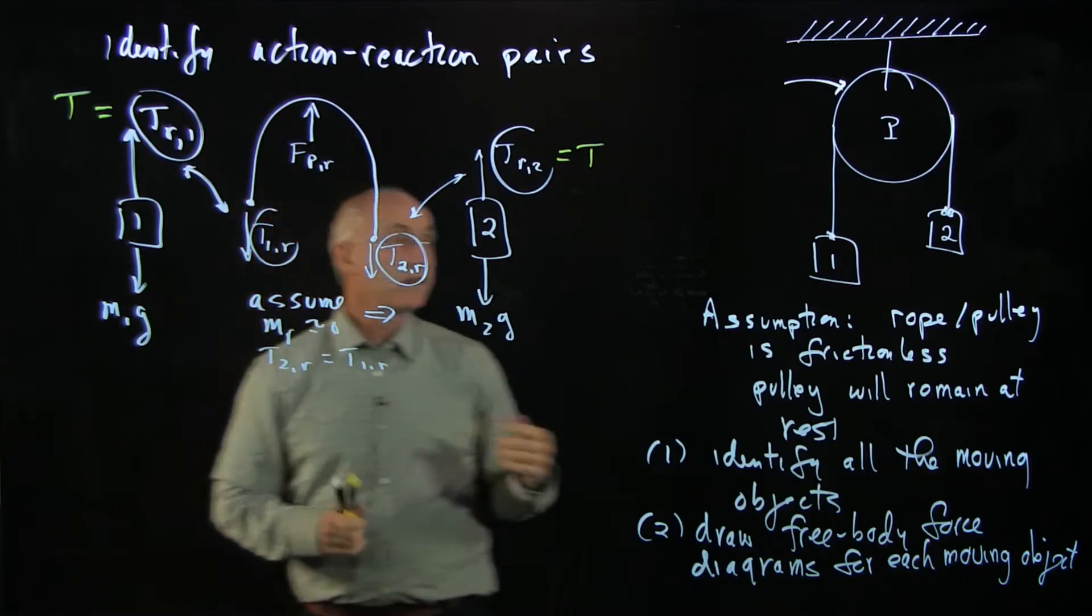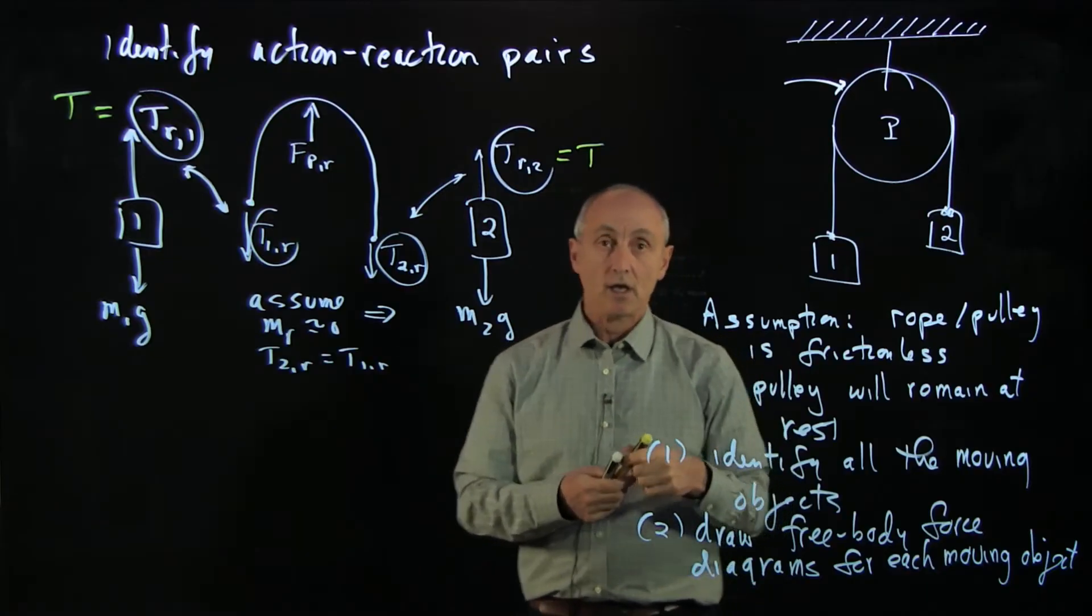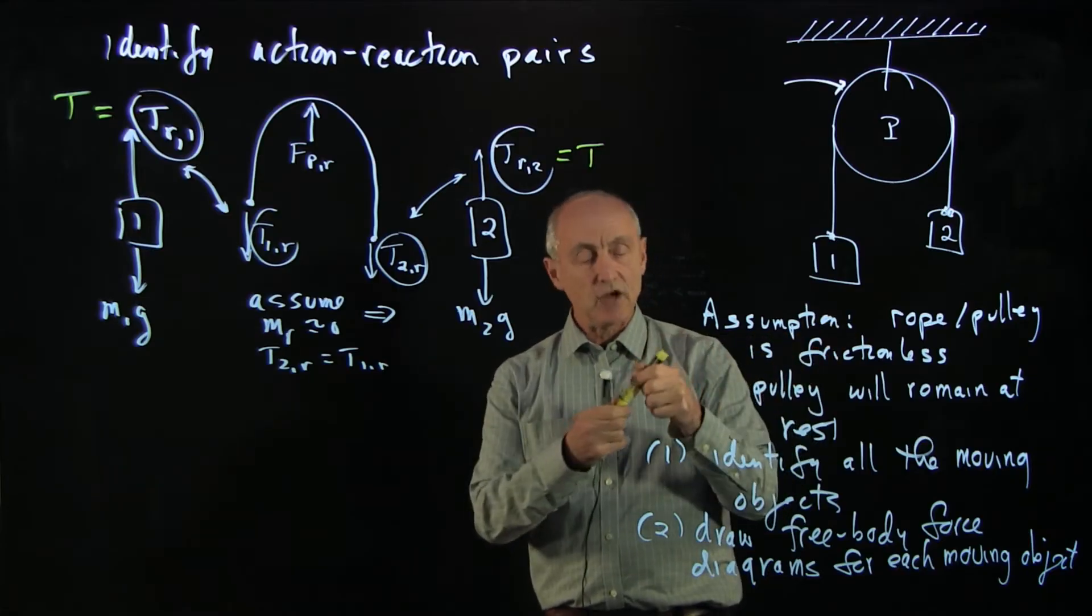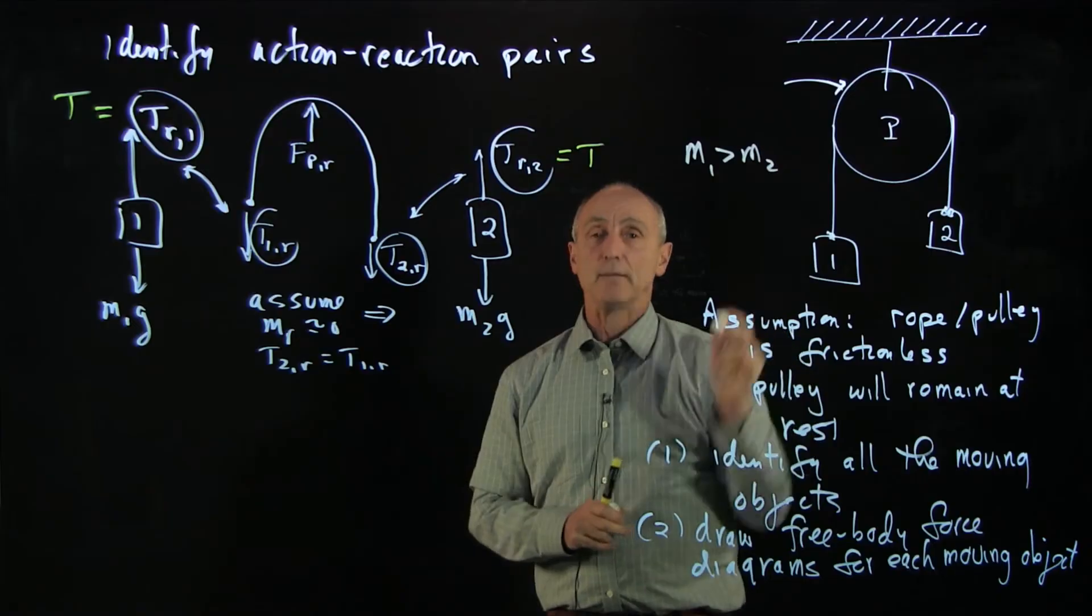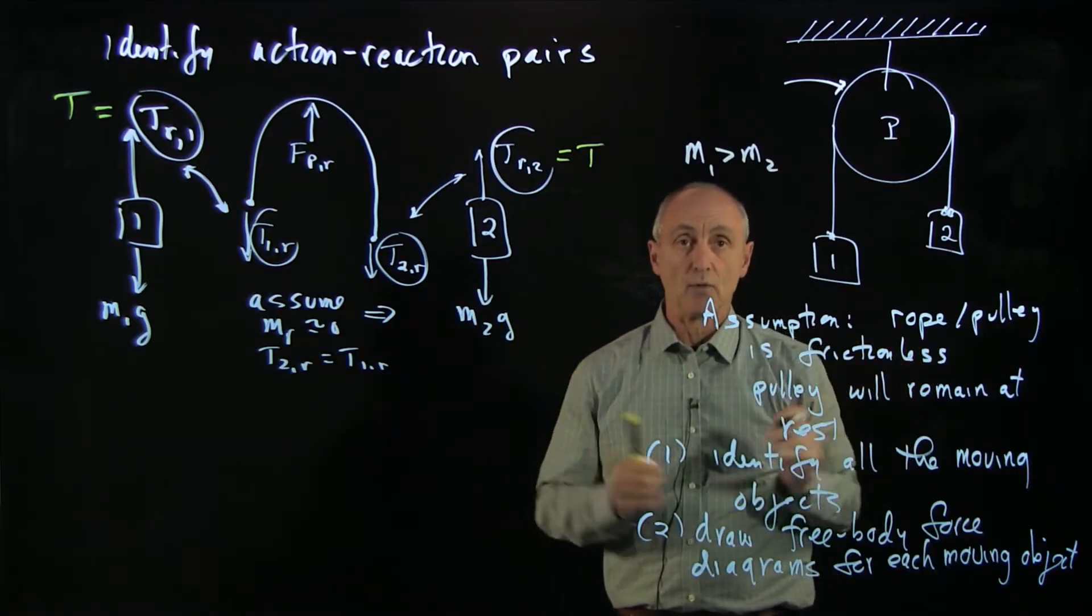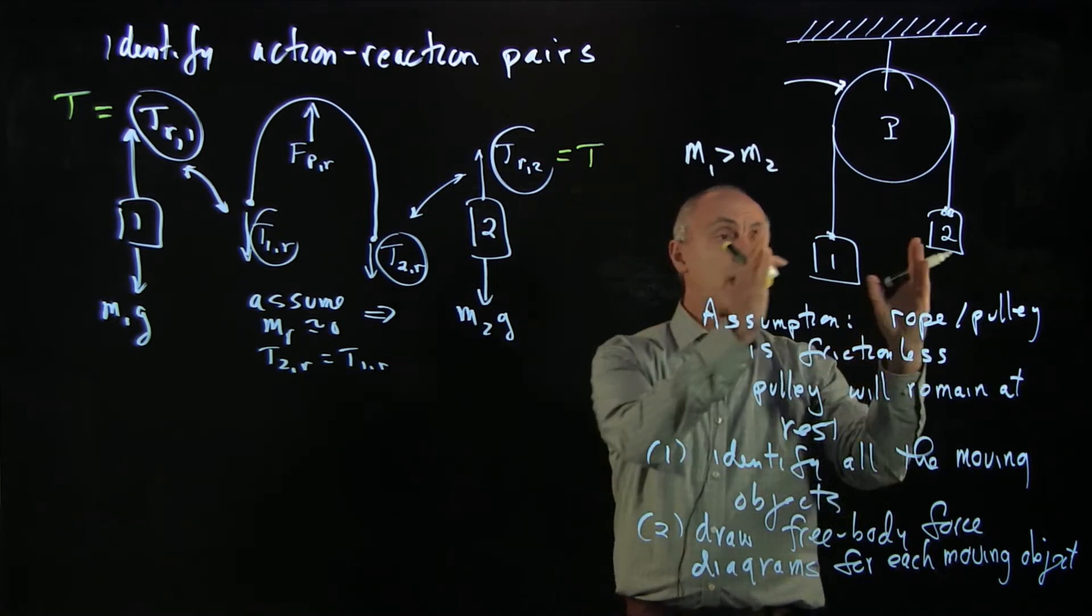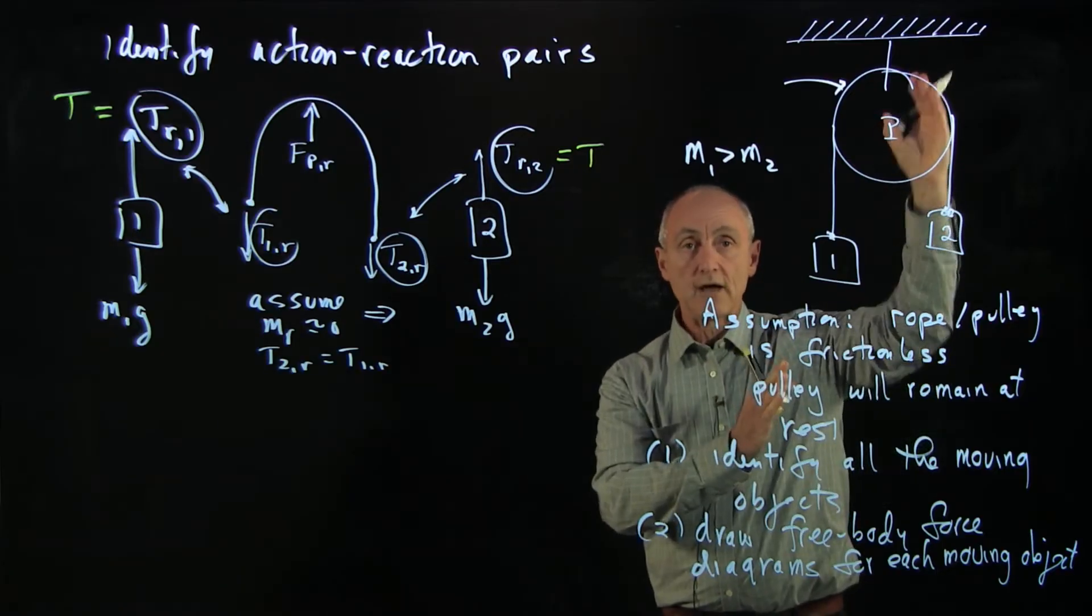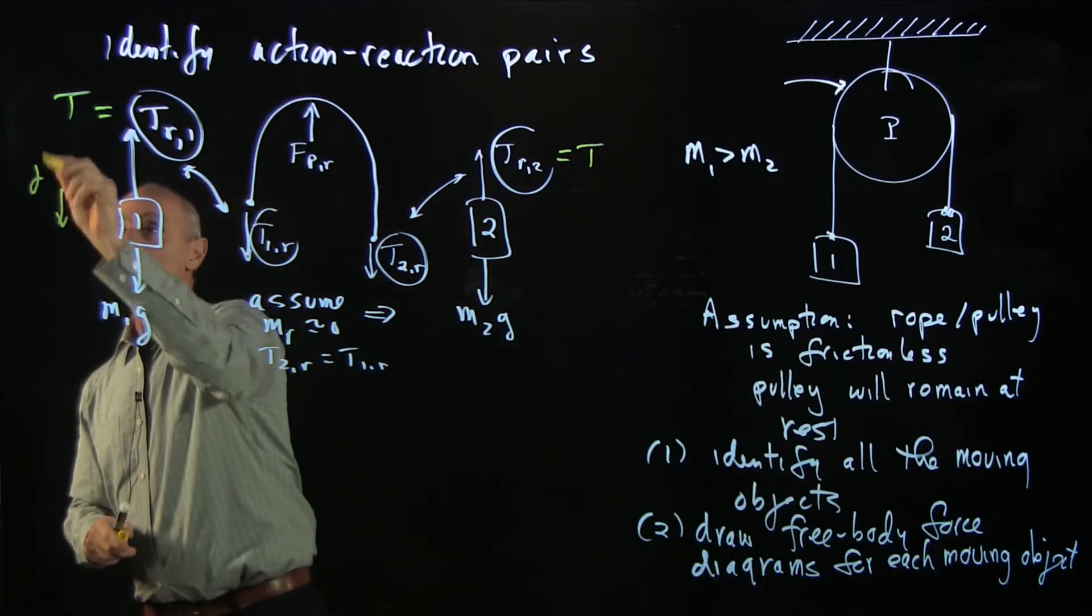A little bit later on, when we talk about pulleys that have mass with friction between them, the tension on the two sides of the pulley will not be the same. But for the moment, we've made these assumptions. One of the things that helps a lot is we need to choose unit vectors to write down the vector equations for Newton's second law. Let's assume m1 is greater than m2. This gives us some feeling for how the system moves.